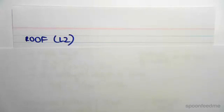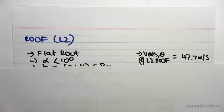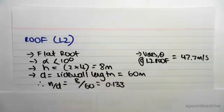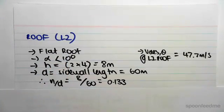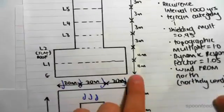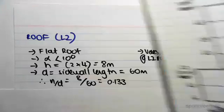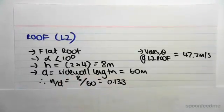Hey guys, I'm just continuing straight on from the previous video. We're now going to be finding the roof pressure along the lower level roof, so the roof on level 2. Some information we have: a flat roof, alpha is less than 10 degrees because it's flat, the height of this roof is now at 8 meters, so it's 4 plus 4, the length of the sidewall is now 60 meters.